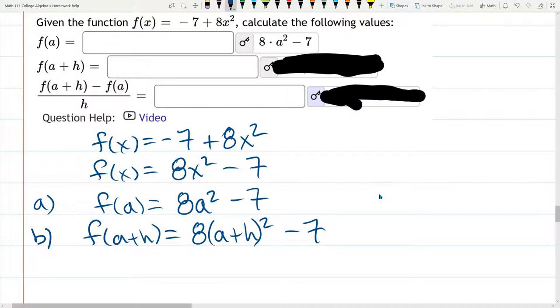This is f of a plus h. We will need to expand it to foil it out to simplify the difference quotient. But for part b, this is just fine. And you see that's exactly what they have there.